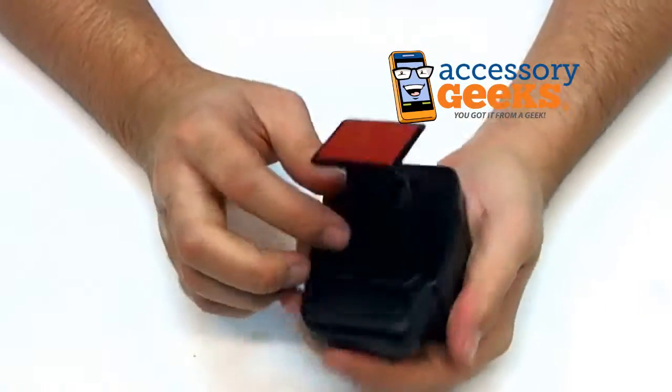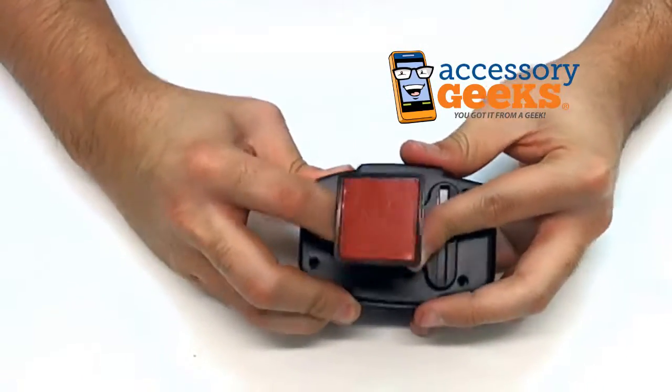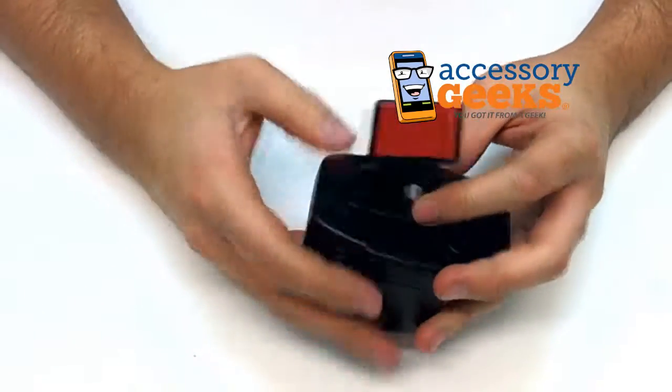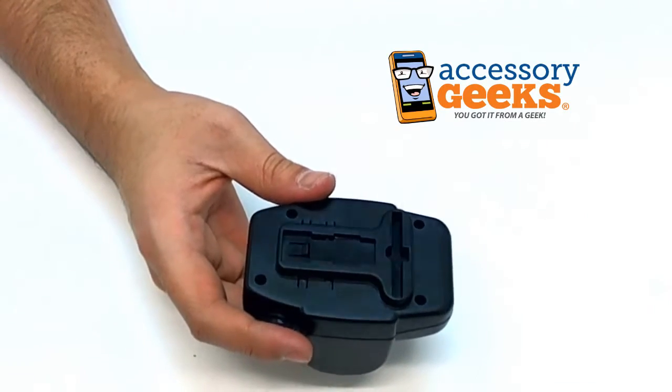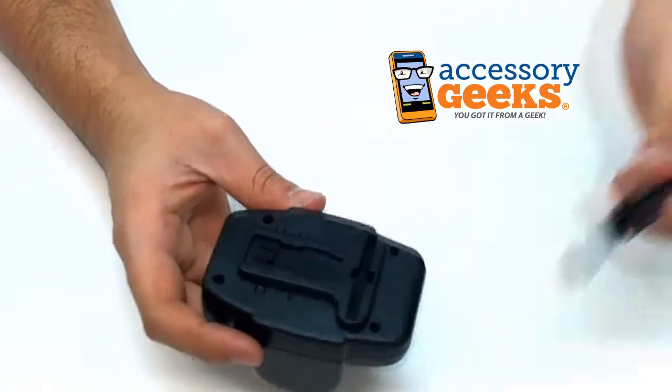This back part is removable. You just got to push down an almost invisible little lip and slide it down, and that's removable so you can put on these.